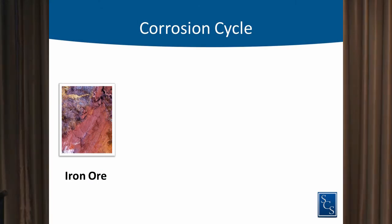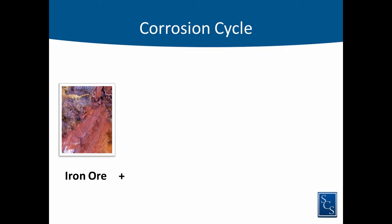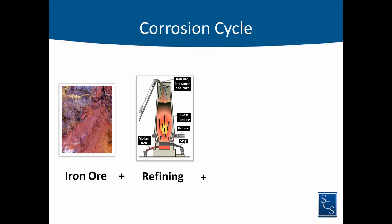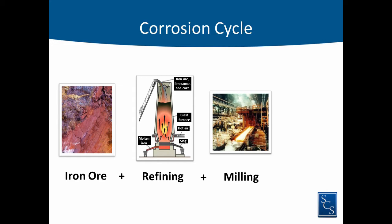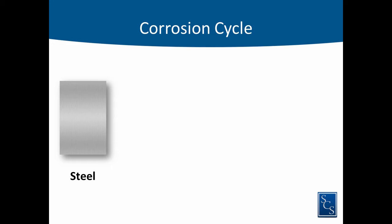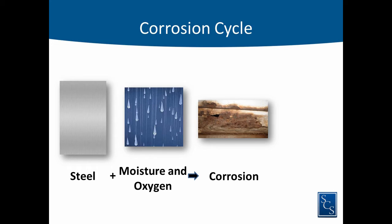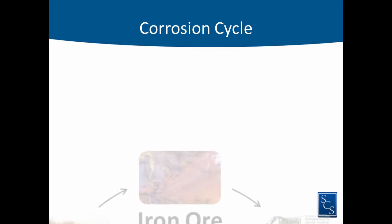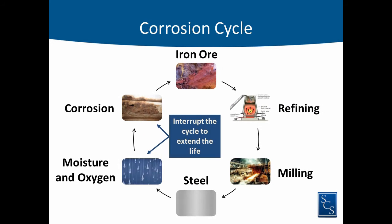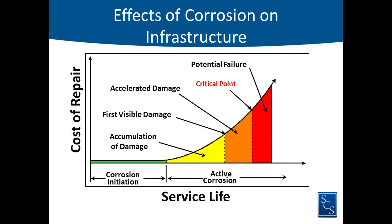We want to identify the problem, but we also want to get a handle on how big the problem is — quantify it. We take iron ore, put a lot of energy into it, and make steel so we can use it. What does it want to do? It wants to go right back to where it came from. Unless you keep that energy up, it wants to revert. We're trying to put the energy back into the system to keep it where we want it to be. Interruption of the cycle requires energy.